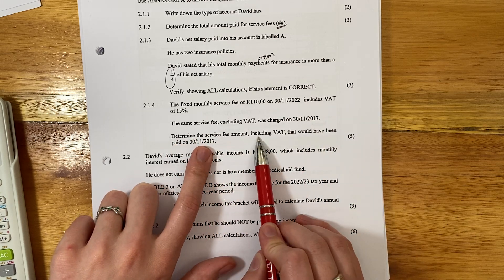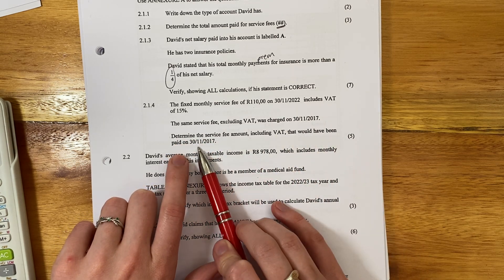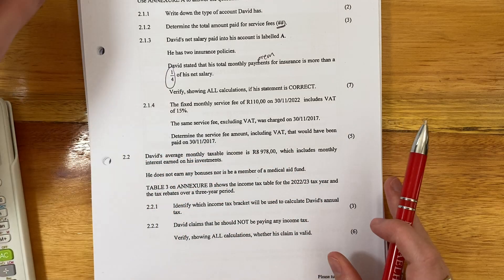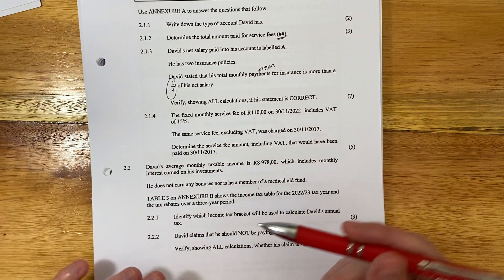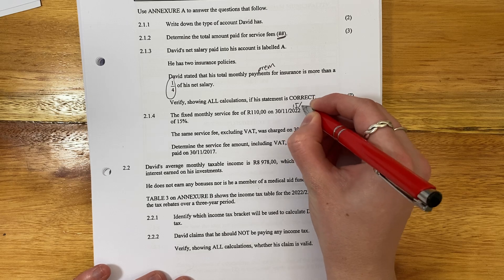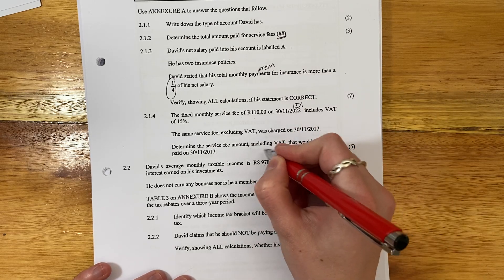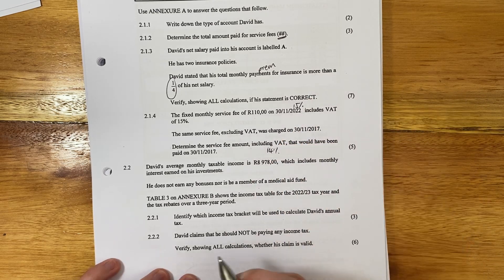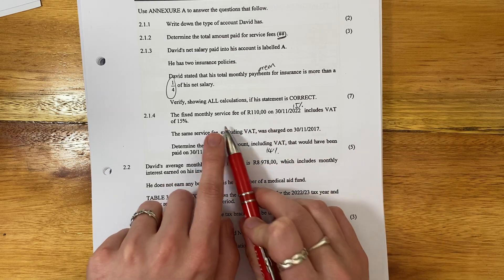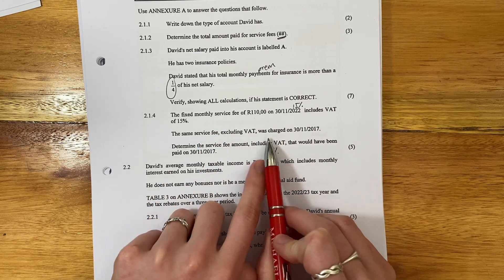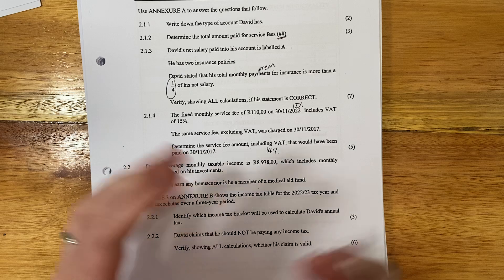Determine the service fee, including VAT, that would have been paid five years earlier. Now, students always get confused with this. The whole thing they're trying to show you here is this was 15% VAT there, and at this point in time, it was 14%. So basically what we have to do is we have to strip 15% VAT out there and then add on 14%.